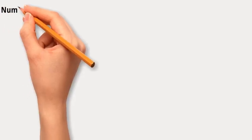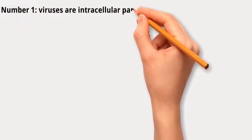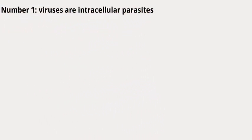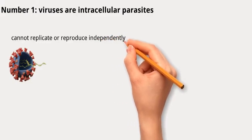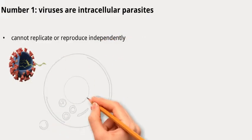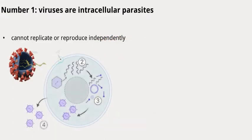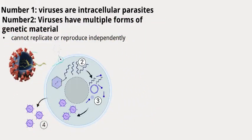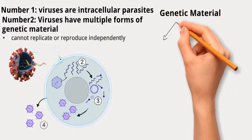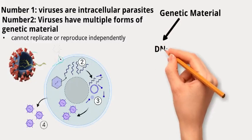According to today's understanding, viruses share many common characteristics. Number one: viruses are obligate intracellular parasites, meaning they cannot replicate or reproduce independently. They rely on the machinery and resources of a host cell to carry out their life cycle, including replication and assembly into virus particles.